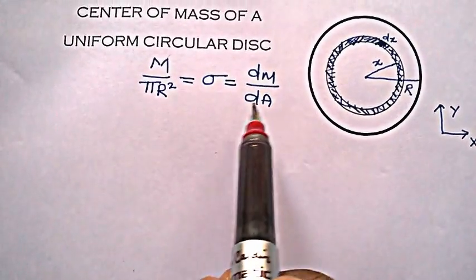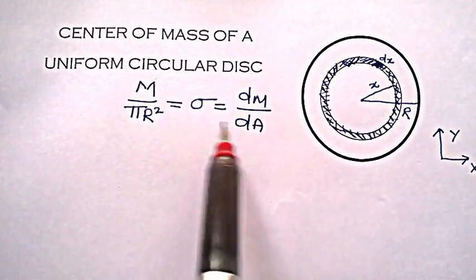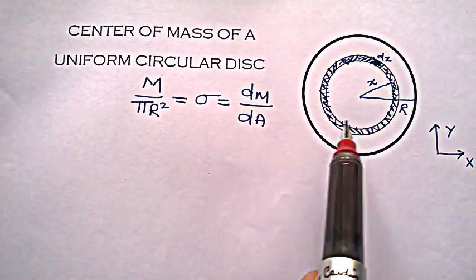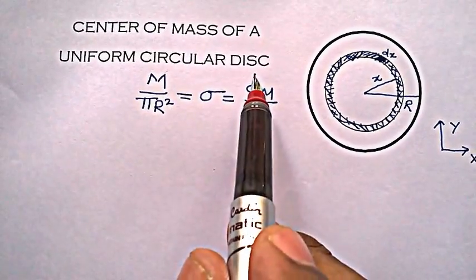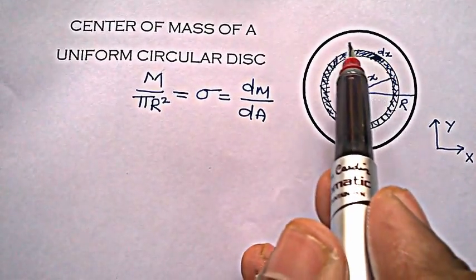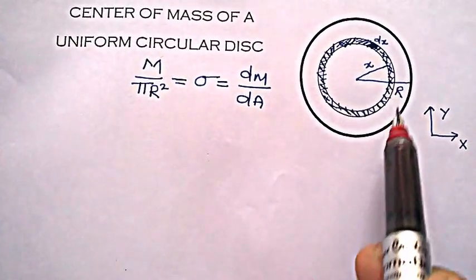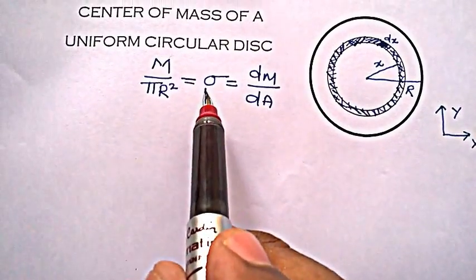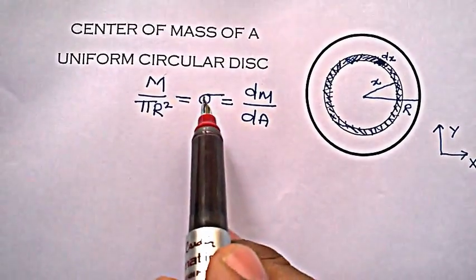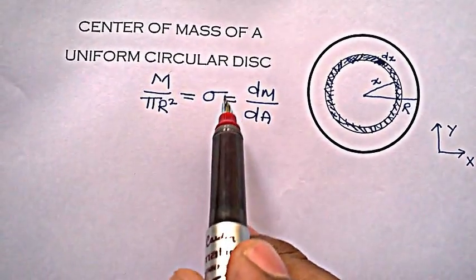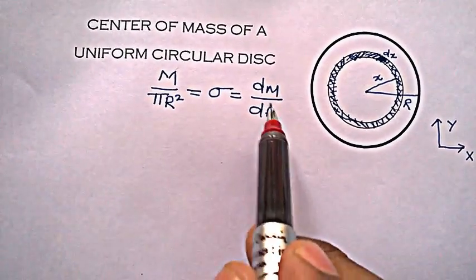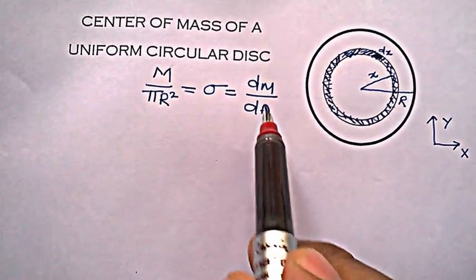Like in old videos I have taken lambda which is linear mass density. Since this is a circular disk and mass is spread entirely over the surface, we need to choose the other entity called surface mass density, which is mass per area or mass per unit area.